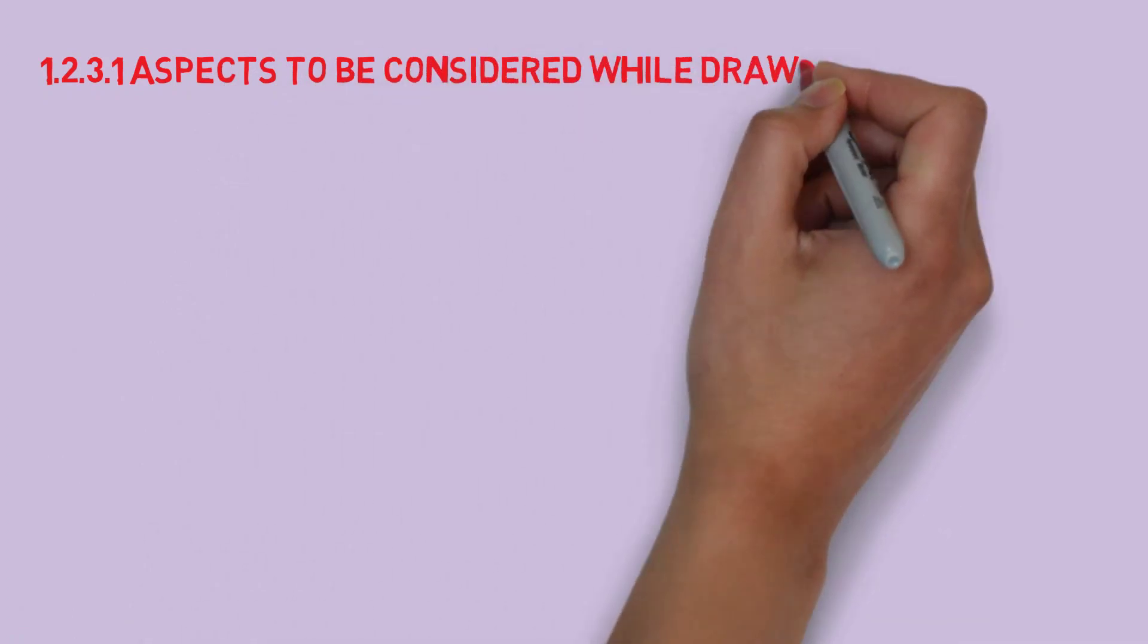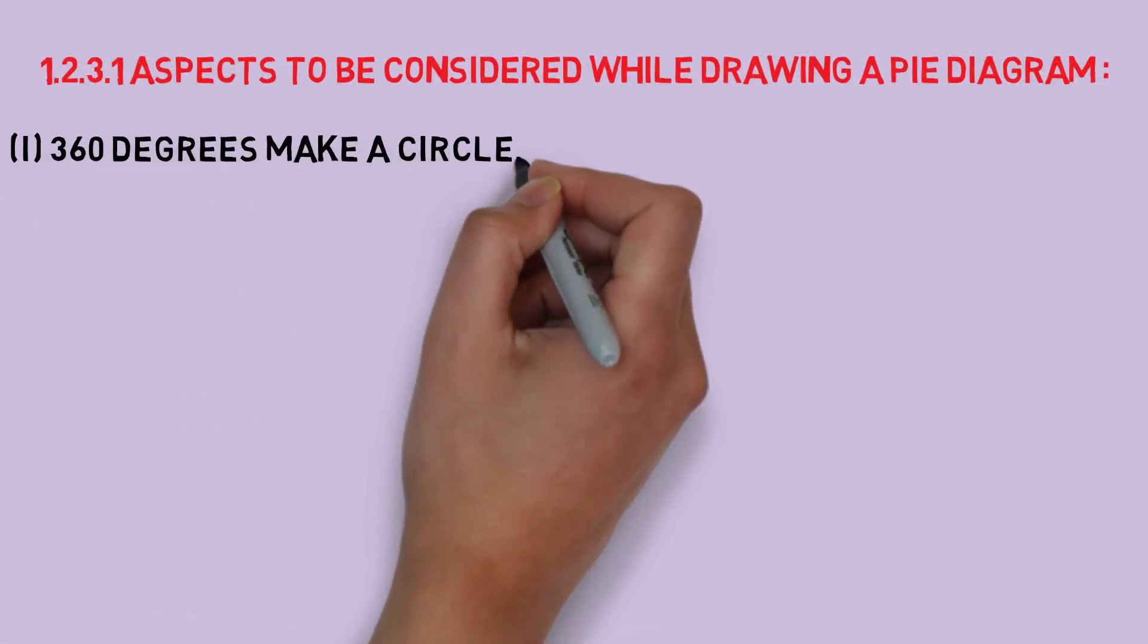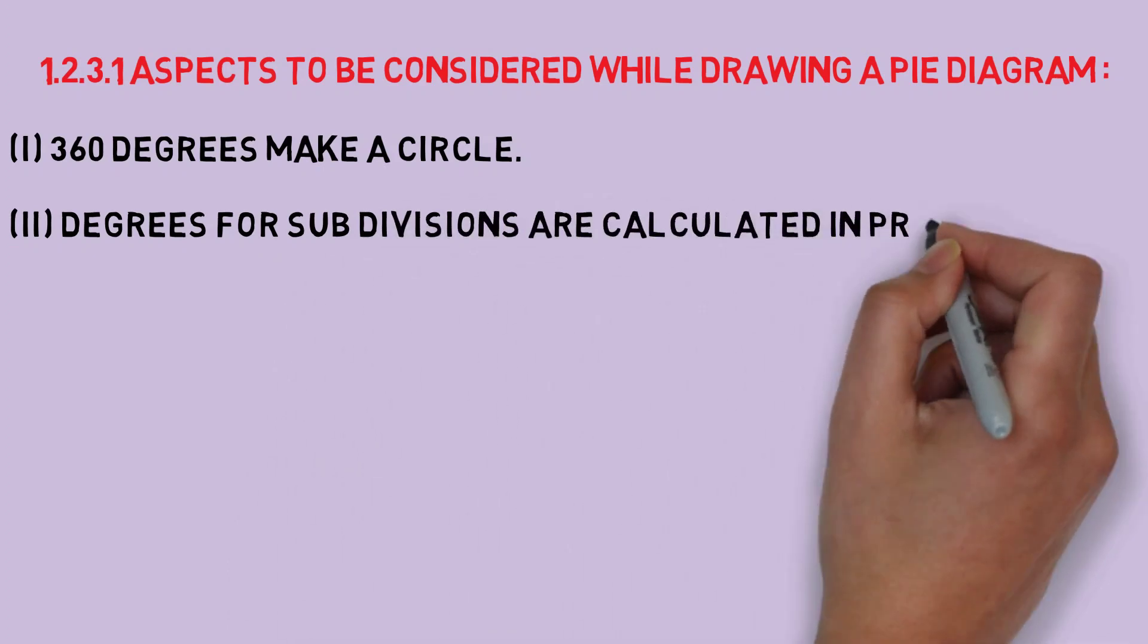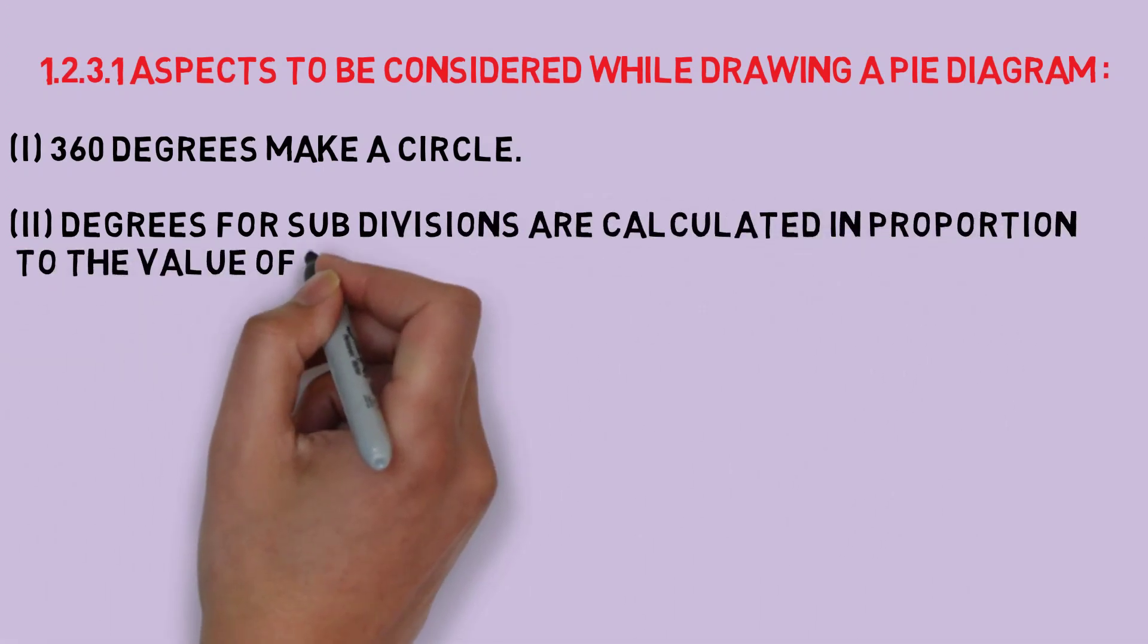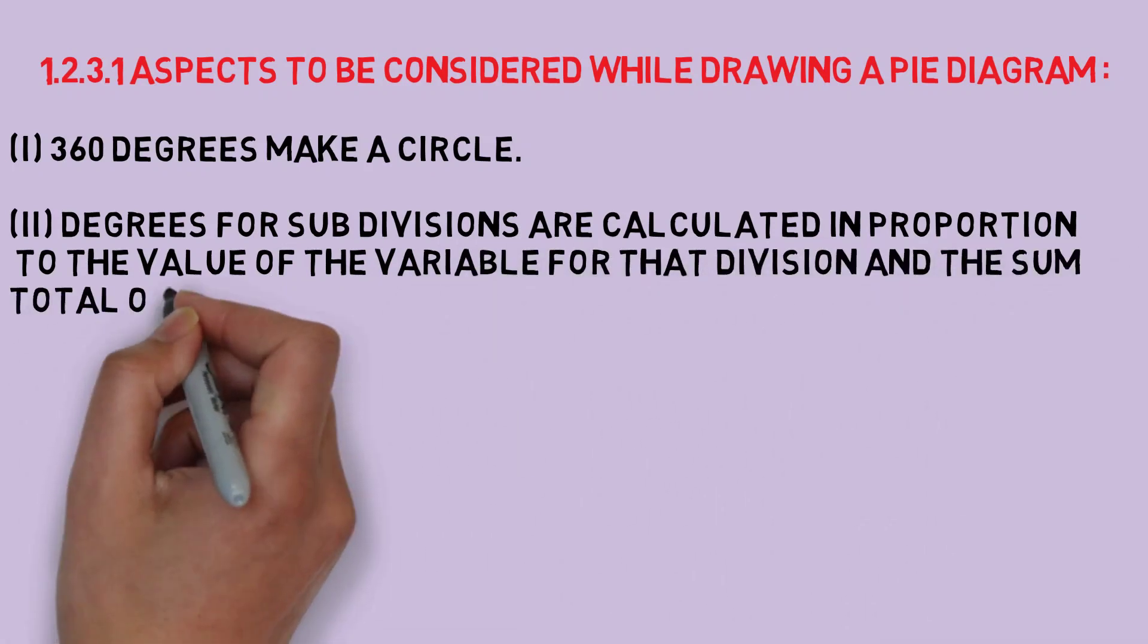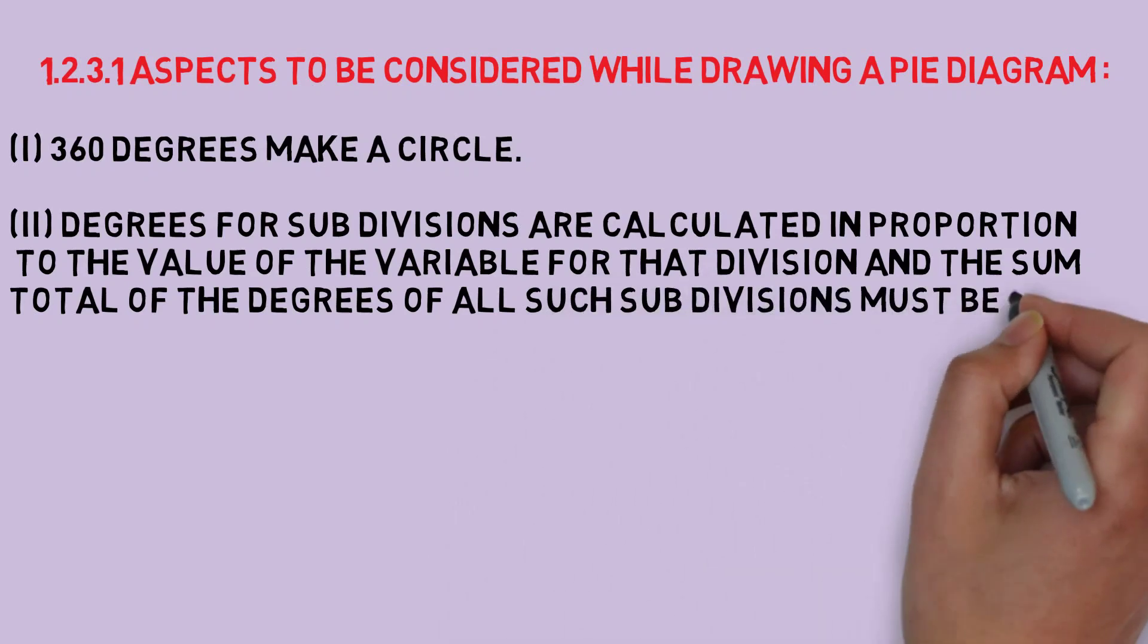Now we will move further to the aspects to be considered while drawing a pie diagram. Number one: 360 degrees make a circle. Number two: degrees for subdivisions are calculated in proportion to the value of the variable for that division and the sum total of the degrees of all such subdivisions must be 360 degrees.